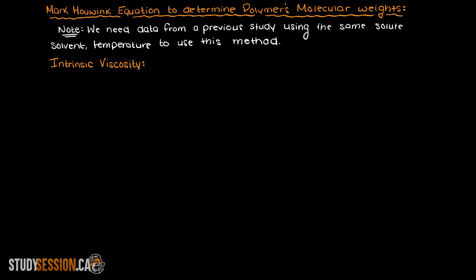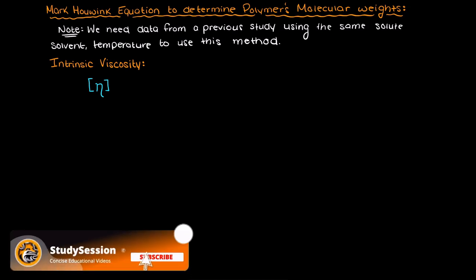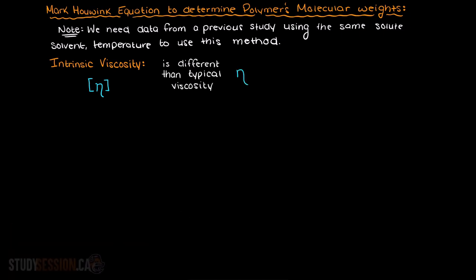So what is a polymer's intrinsic viscosity? Firstly, we represent the intrinsic viscosity in polymer science as an eta symbol with square brackets. This is not to be confused with your typical viscosity, which is represented by an eta with no square brackets. These are not the same thing.